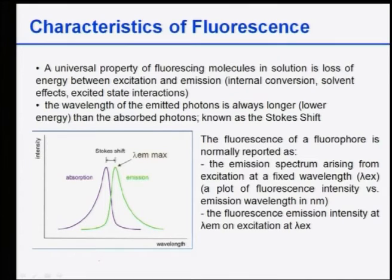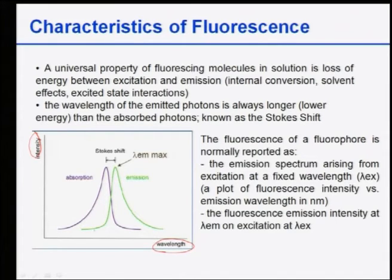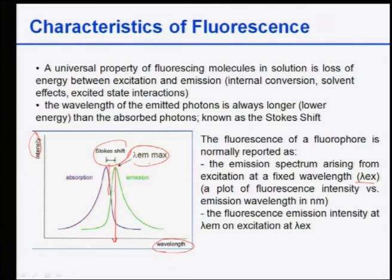Looking at characteristic fluorescence spectra: a universal property of any fluorescent molecule in solution is loss of energy between excitation and emission states, and this can be measured as intensity. A plot of intensity versus wavelength shows the absorption and emission spectra as mirror images, separated by the Stokes shift. The emission lambda maximum (λ_em max) is the key parameter — fluorescence emission intensity at λ_em max is what is measured and used for real study.